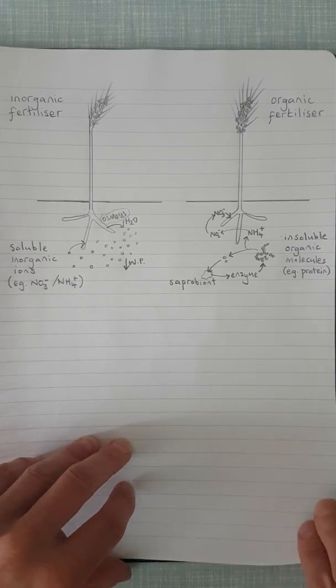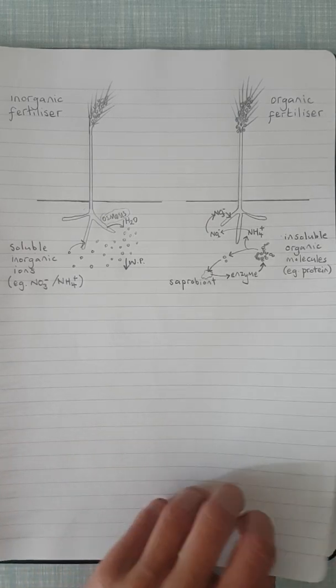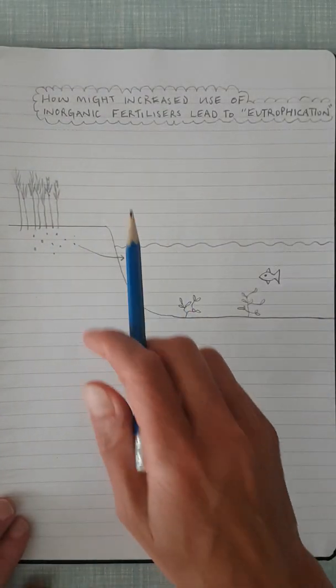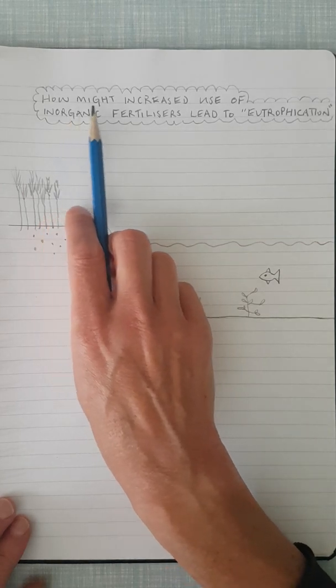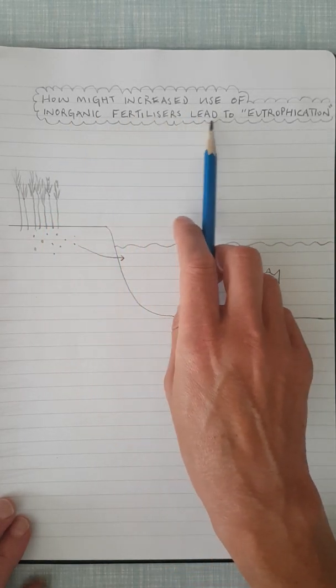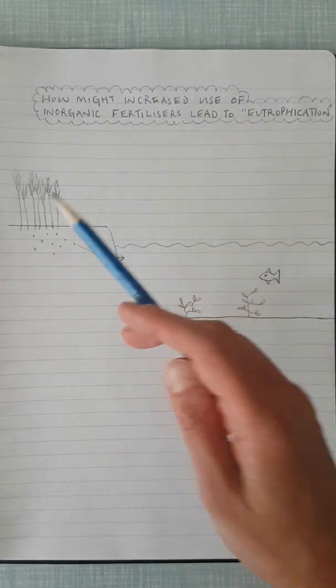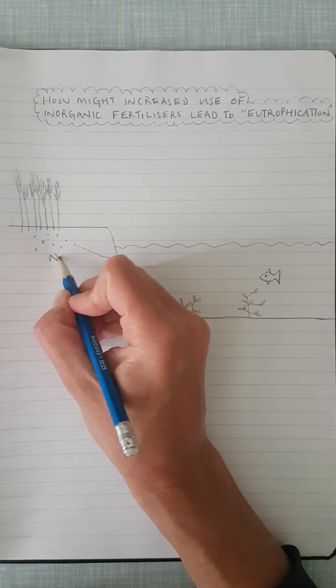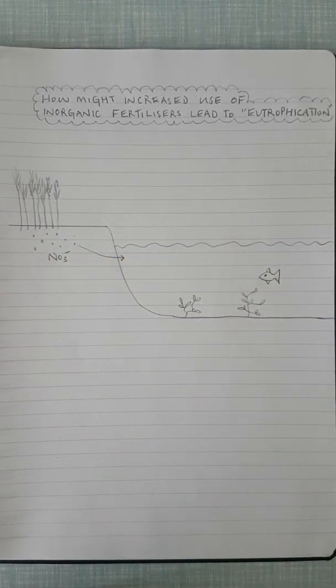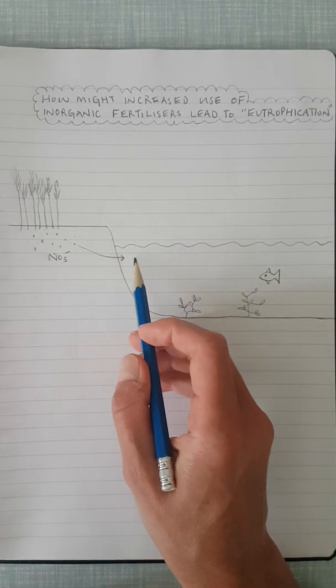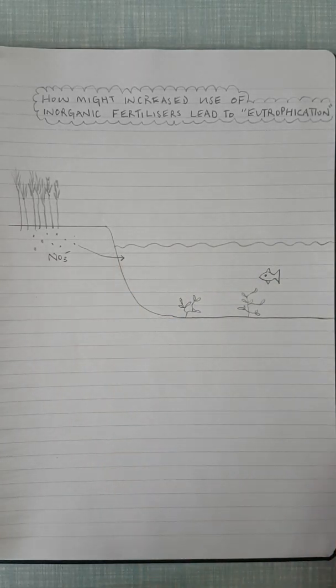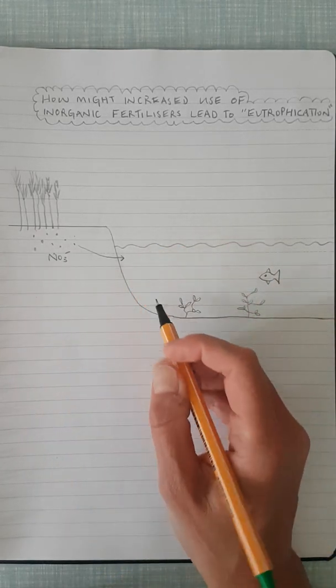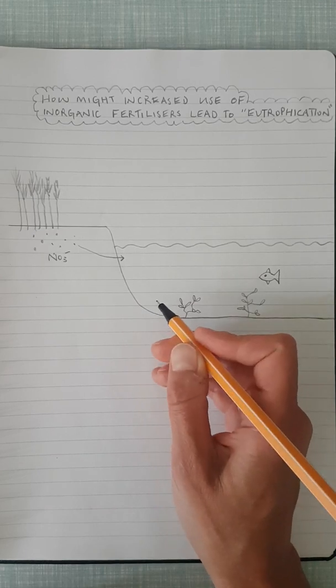Let's have a look at the process of eutrophication. Remember, this is a disadvantage of using inorganic fertilizers. So in an exam, you might be asked how might an increased use of inorganic fertilizers lead to eutrophication, or you might be asked this kind of question in slightly different wording. So here are the inorganic ions, nitrates for instance, and they are leaching, they're running off into the waterway. What this does then is it provides more food, the nitrates being the nutrients, for algae to increase their rate of growth.